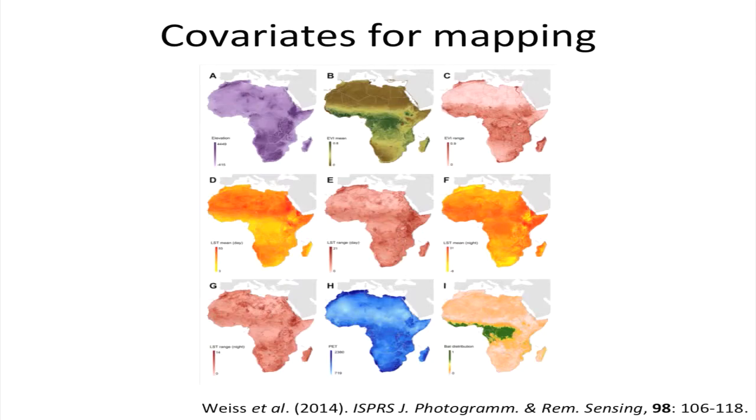Our group is primarily funded for malaria, so we were pre-adapted in terms of having covariates available — we've put an enormous amount of energy into making very refined environmental covariates for malaria mapping in Africa. Some of those available to this analysis include elevation, EVI (the enhanced vegetation index — an index of the quantity of vegetation across the continent), a set of temperature variables, and bat distribution, which is something we predict in this process. All of these are freely available.